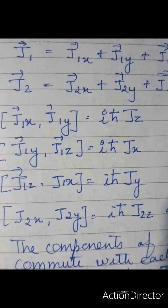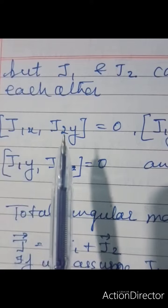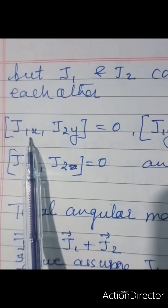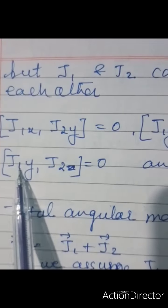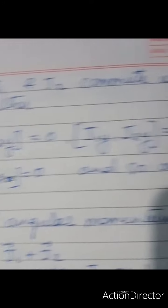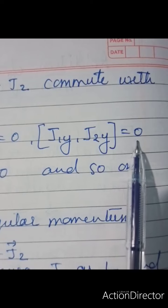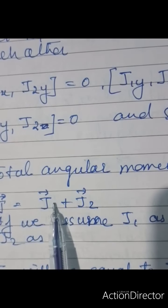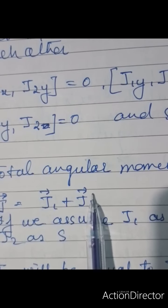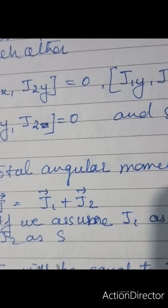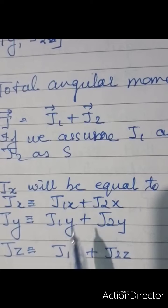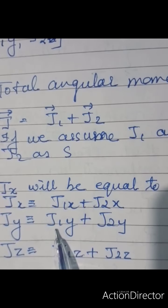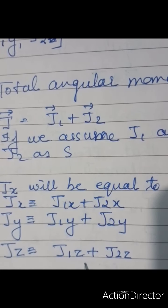The components of J1 do not commute with each other, and similarly J2 components do not commute with each other. But we can see that J1 and J2 will commute with each other — for example, [J1x, J2y] = 0, [J1y, J2z] = 0, and [J1y, J2y] = 0, and so on. For the total angular momentum, we take the summation of J1 and J2, identifying J1 as L and J2 as S. So Jx = J1x + J2x, Jy = J1y + J2y, and Jz = J1z + J2z.